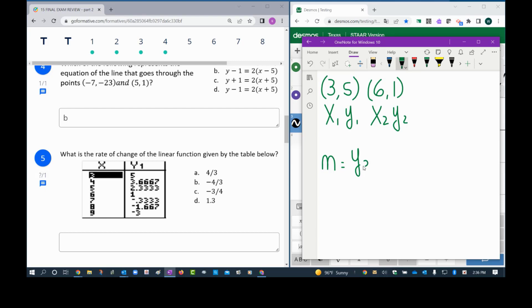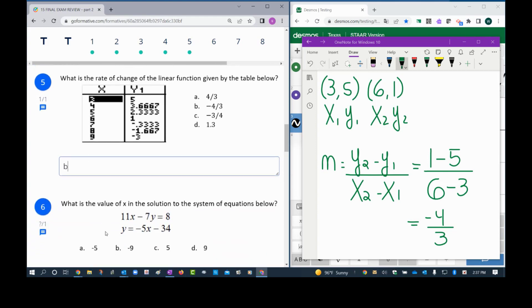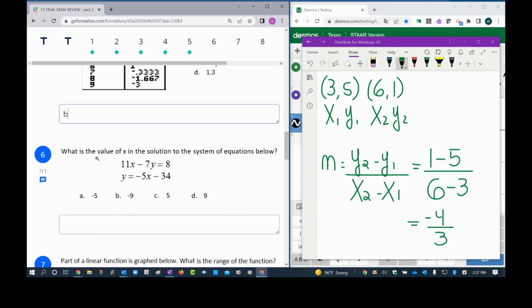These are really nice numbers, not a negative in sight. So now I'll be able to label x1, y1, x2, y2. And if you remember the formula, m equals y2 minus y1 over x2 minus x1. So y2 is 1 minus y1 which is 5, over x2 which is 6 minus x1 which is 3.